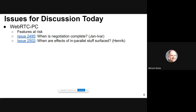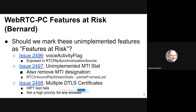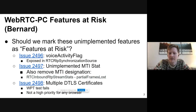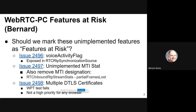Let's talk about WebRTC PC first — features at risk. There are a few unimplemented features not yet marked as features at risk but probably should be. Three issues have been filed relating to that. The first is the voice activity flag, exposed in the RTC RTP synchronization source, but as far as we know nobody implements it. Do we have agreement that this should be marked at risk? No objections — mark that one.